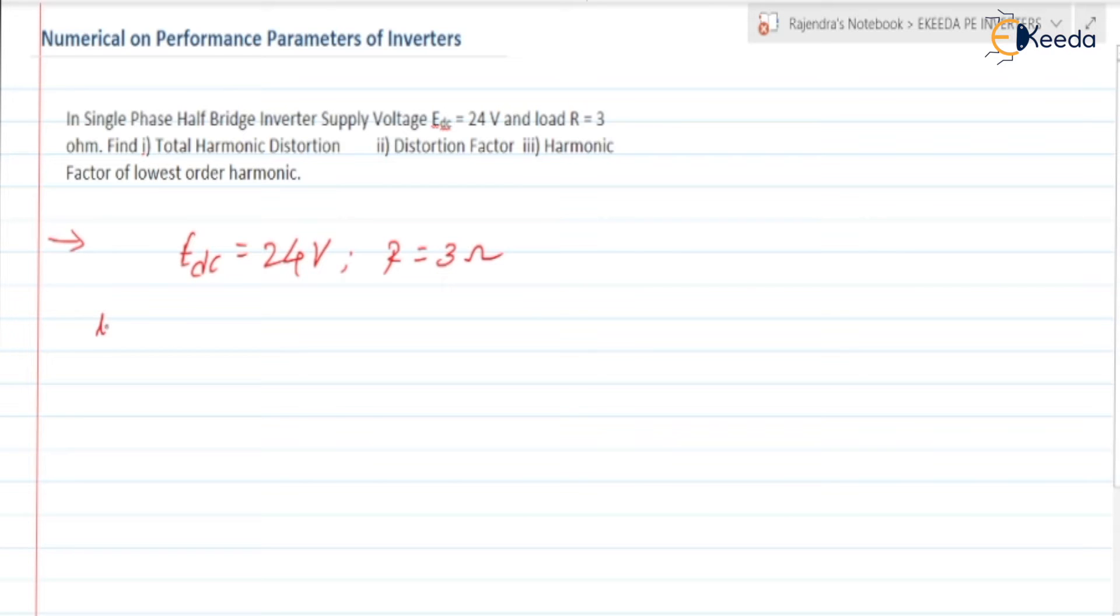First thing is total harmonic distortion THD. For finding the THD we need to find the V0RMS and the V01RMS. Can we find V0RMS for half-bridge inverter? Yes, V0RMS is equal to EDC by 2. It is 24 by 2, so it is equal to 12 volts.